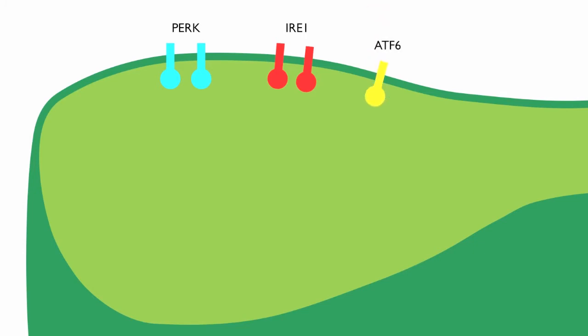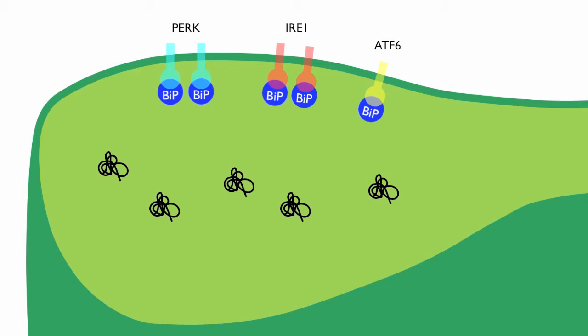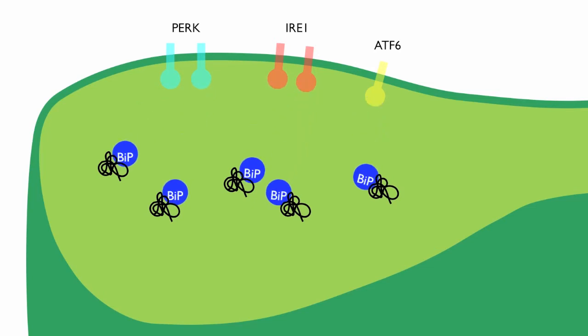Under normal conditions, BIP, which is a chaperone protein, normally binds to ATF6, PERK, and IRE1 and inhibits them. But when misfolded proteins occur in the ER lumen, BIP has a high affinity for these misfolded proteins and binds to them instead of the three sensors. When BIP is no longer bound to the three sensors, this causes their activation. This is the canonical picture of how the unfolded protein response occurs.